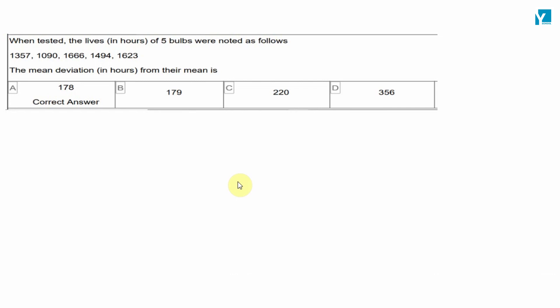So we have 5 observations given: x1, x2, x3, x4, x5. From mean, we need to calculate mean deviation, so first we need to calculate mean.